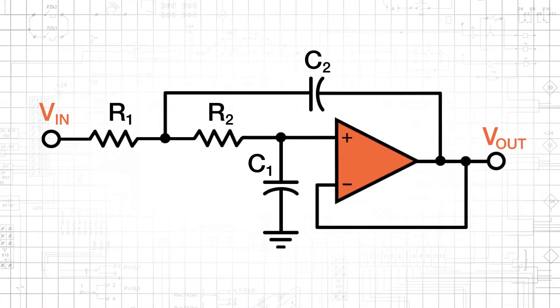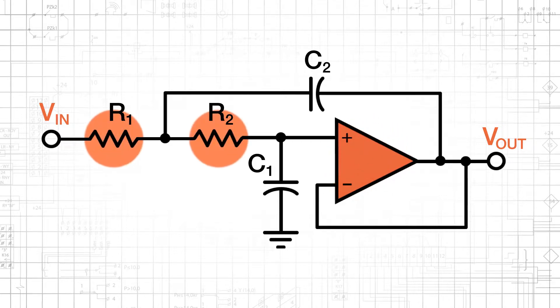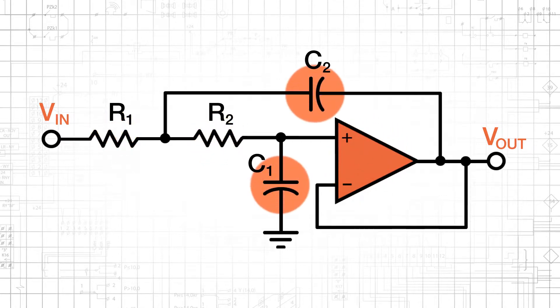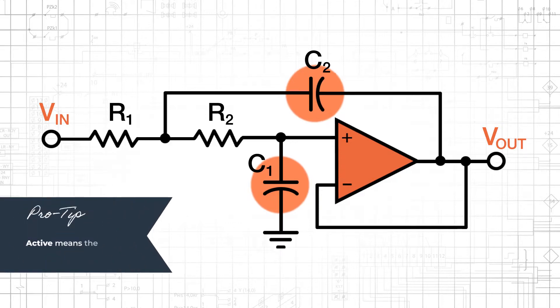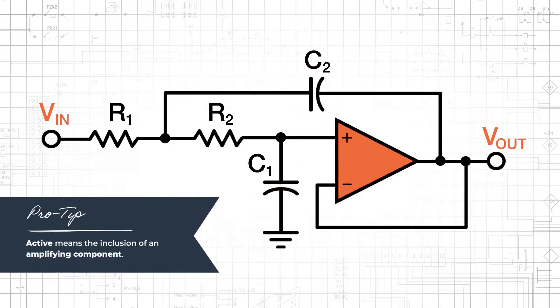This is a unity gain Sallen-Key low-pass filter. As you can see, it requires only one op-amp, two resistors, and two capacitors. We call these filters active because they include an amplifying component.